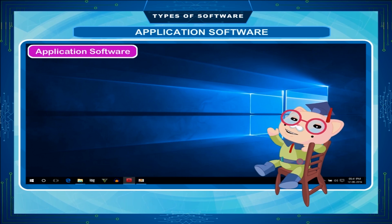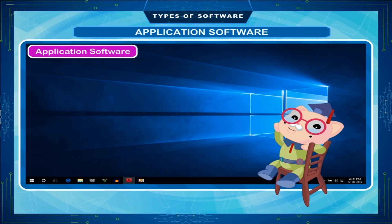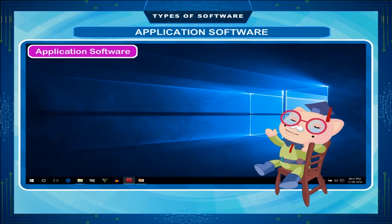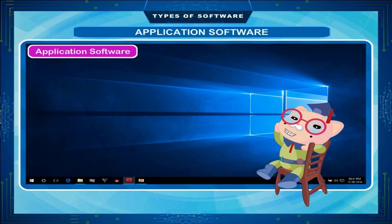Application Software is software that is designed to do a specific job and helps the user as a tool for easy operations. There are different types of application software available in the market.